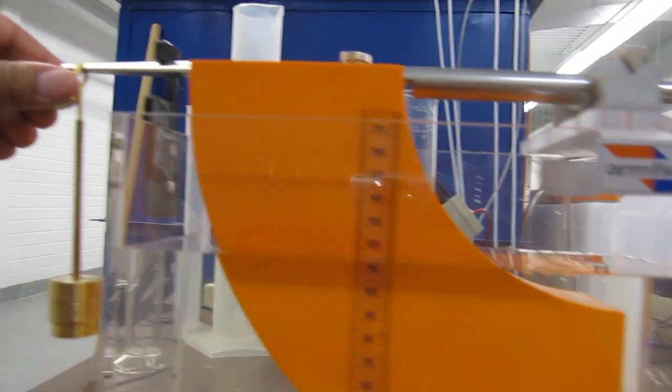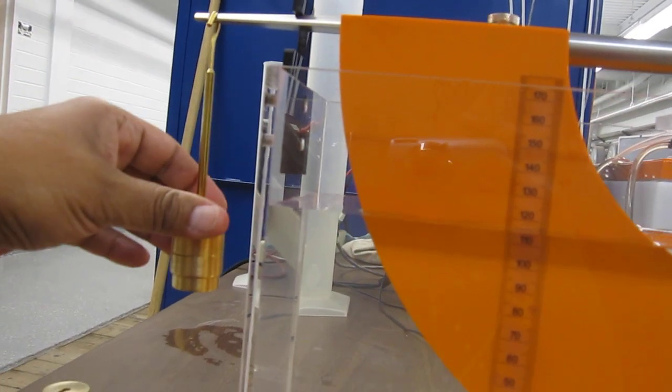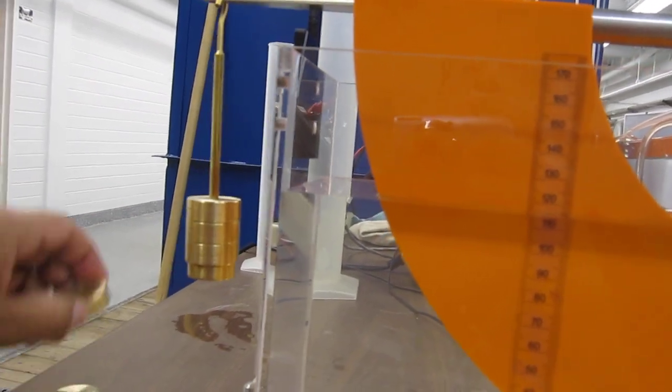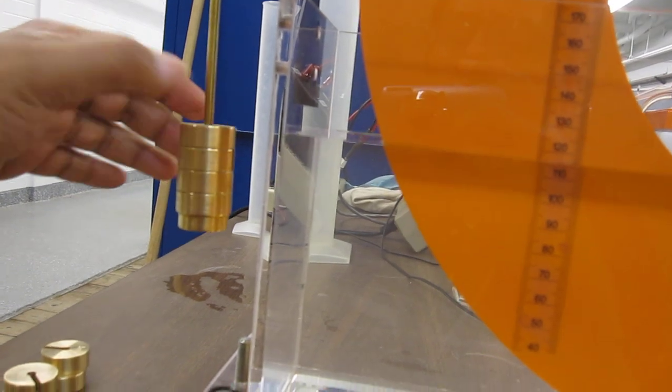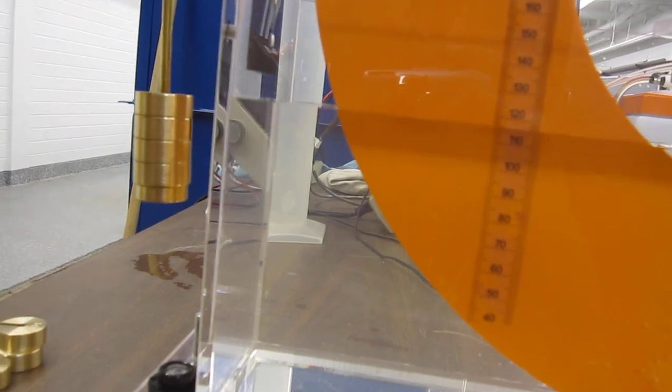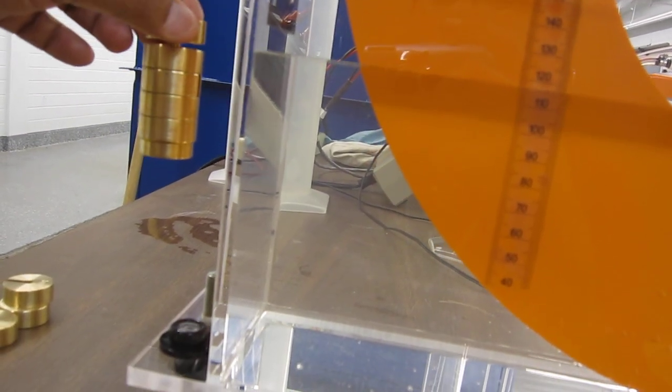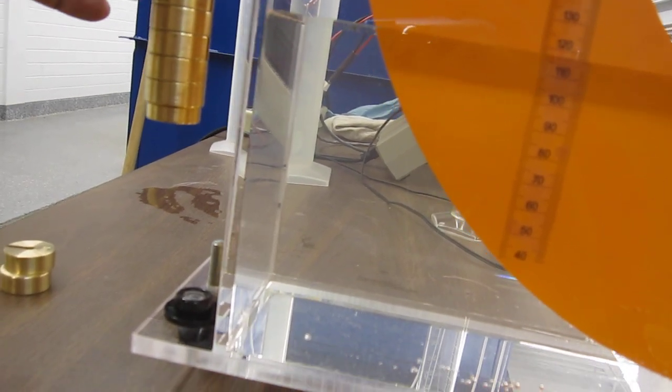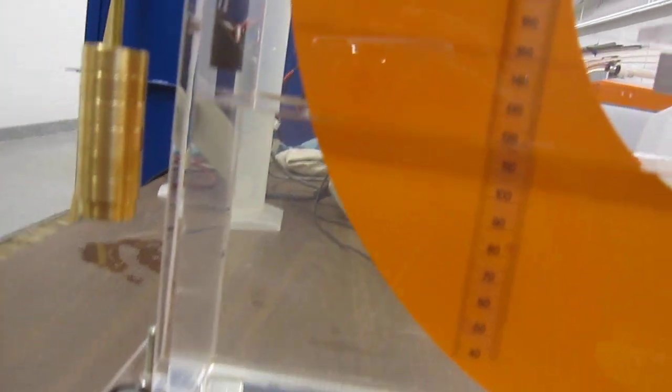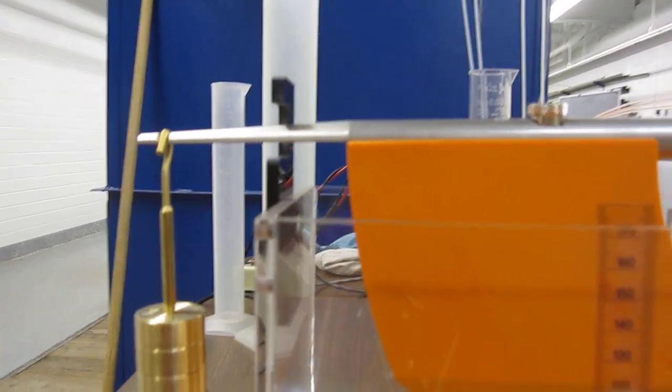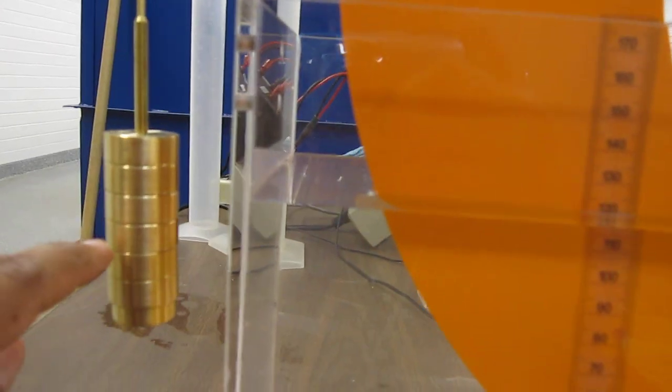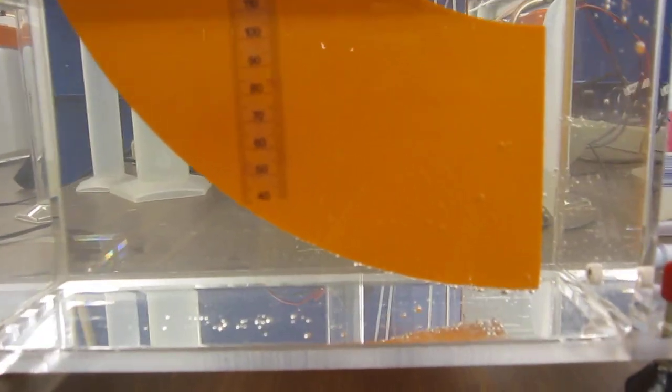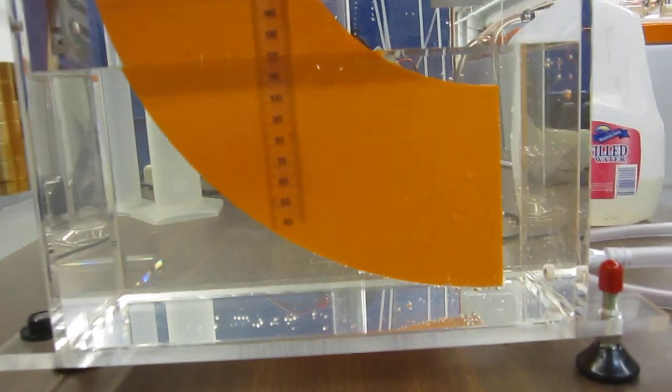And I'm going to start pouring, putting 50 gram weights in here. Until I get, I got something there. So I got one, two, three, four, five, six 50 gram weights, 300 grams to counterbalance a depth of about 120 millimeters. And that's the experiment you have to do.